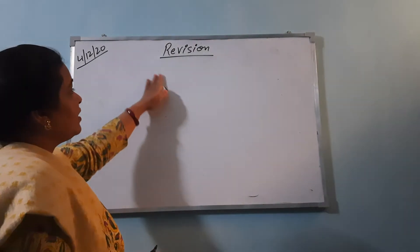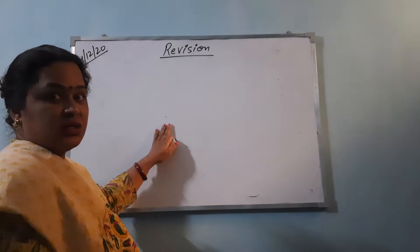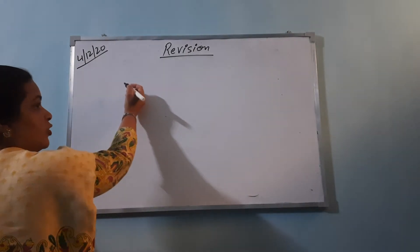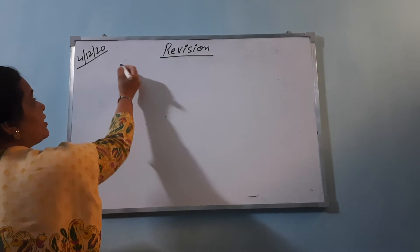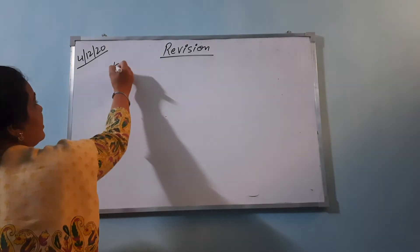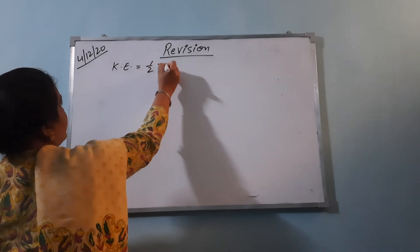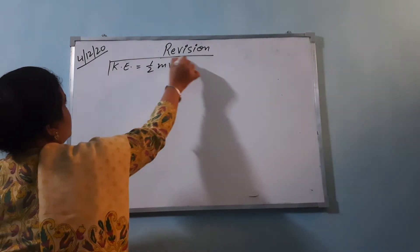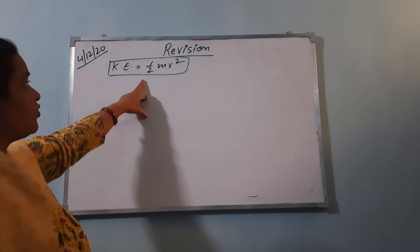As you know, we have done the chapter work and energy. Today we will do the derivation for the formula of kinetic energy. The formula for kinetic energy we have done is kinetic energy is equal to half mv squared. Today we will derive this formula.